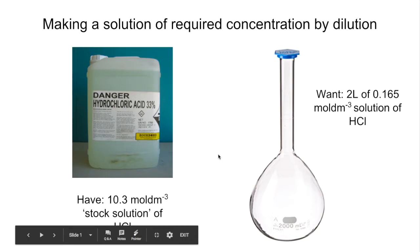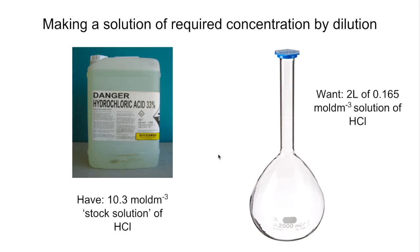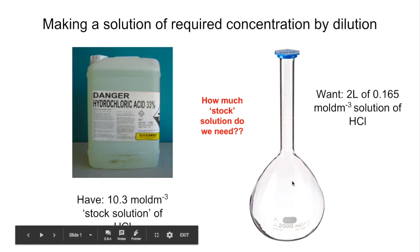And we want to make for a practical two litres of 0.165 moles per decimetre cubed HCl. So basically the question is how much stock solution do we need in there and then make it up to two litres.